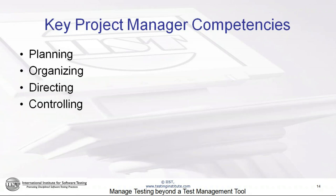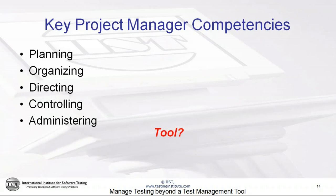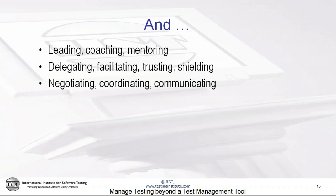If you've studied project management, you've probably seen key project manager competencies: planning, organizing, directing, and controlling. There's a fifth competency that tends to be overlooked, and that's administering — doing the work of managing the project. One of the first places that projects fail is that project managers don't give themselves time to do the work of managing the project. When the project isn't managed, the planning, organizing, directing, and controlling fall down. Tools can capture the results of planning and organizing and controlling and administering to some extent, but the tool does not do the planning or organizing or directing or controlling or administering.